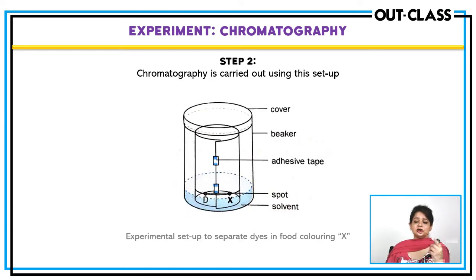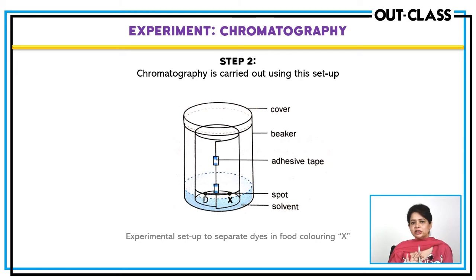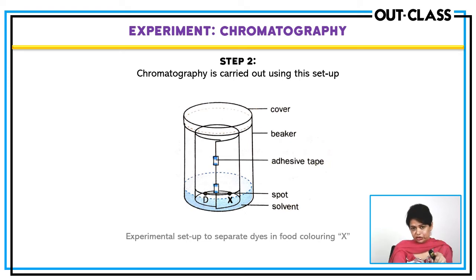We hang the paper in the tank and allow the solvent to rise. When the solvent reaches near the upper end of the filter paper, we remove the chromatogram. By that time all the spots will have separated, and we can calculate their RF values. Remember to cover the apparatus to reduce evaporation of the solvent from the filter paper.